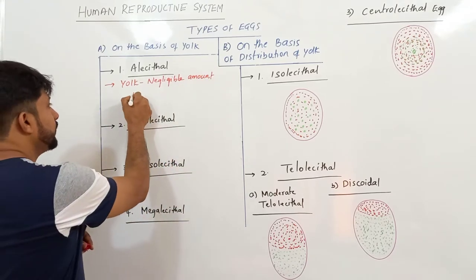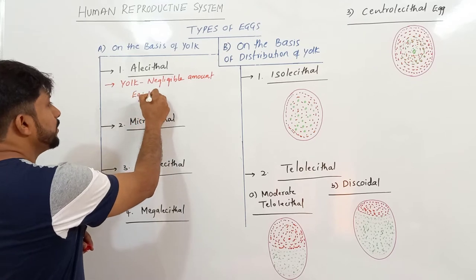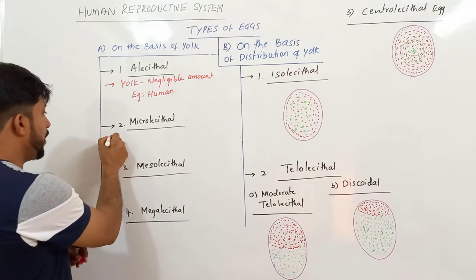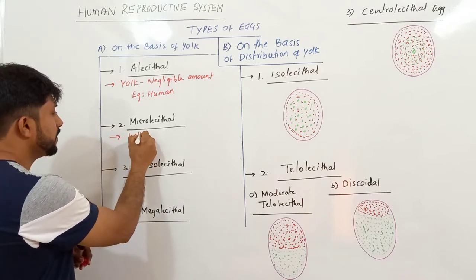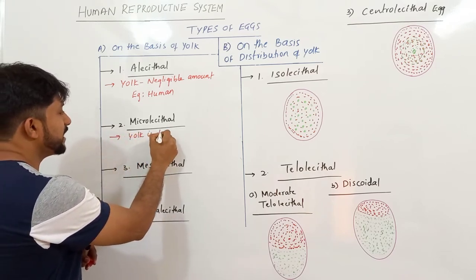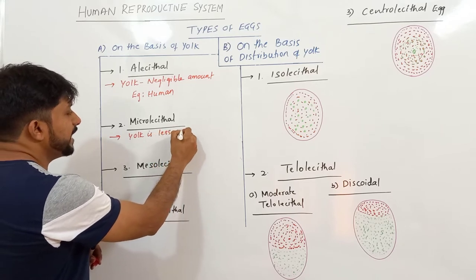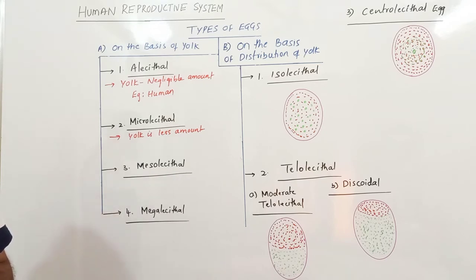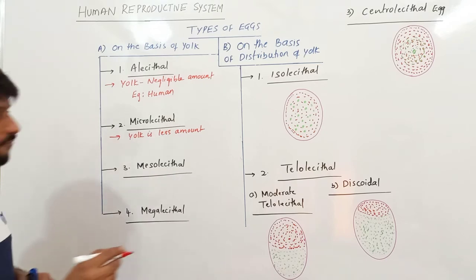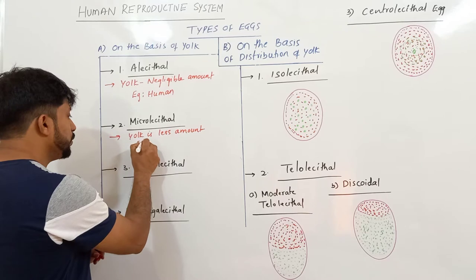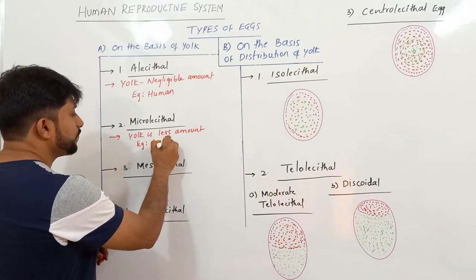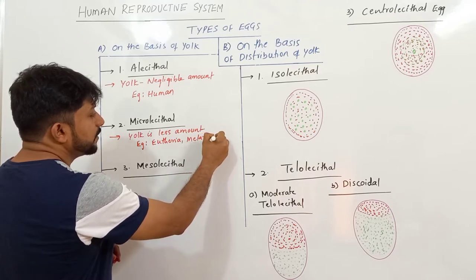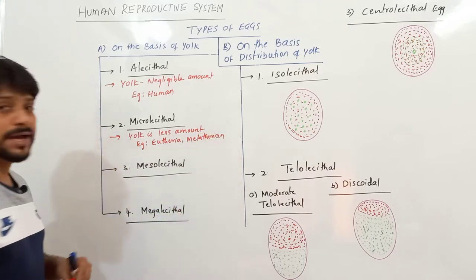Alicethal eggs are found in humans. Microlicethal eggs have a very less amount of yolk. Those are called Microlicethal eggs. Microlicethal eggs are found in Eutherian mammals and in Metatherians.